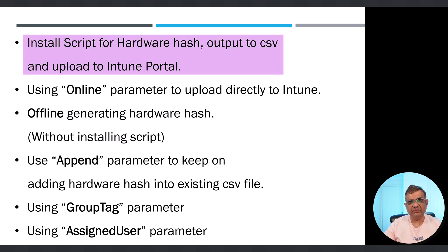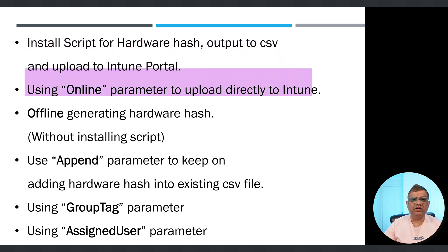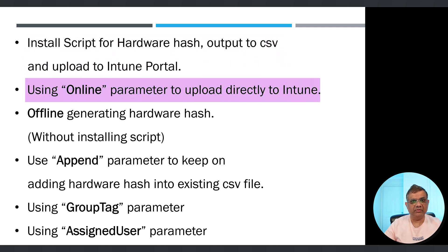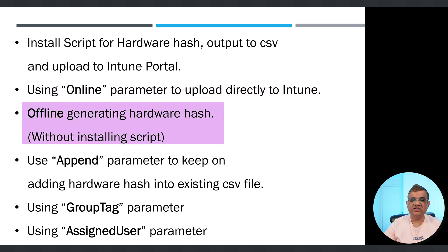The very first method is the traditional way where we install the script to output a CSV file, which can then be uploaded into the Intune admin center. The second is the online parameter — if we use it, we can simply upload the hardware hash using a command line without going to the Intune admin portal. The third is offline generating the hardware hash without installing the script.